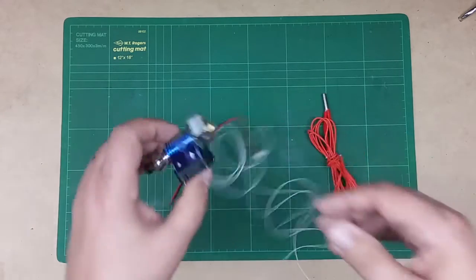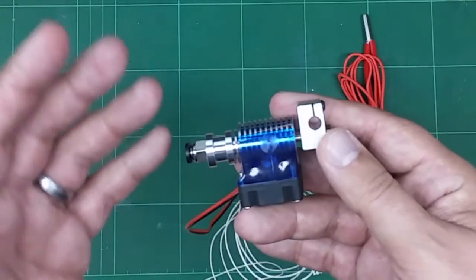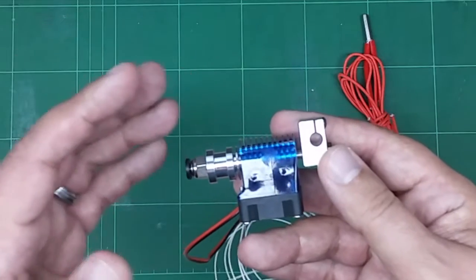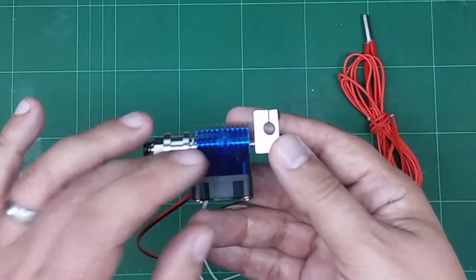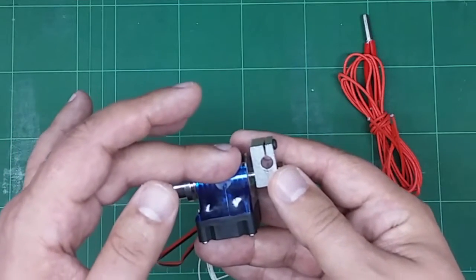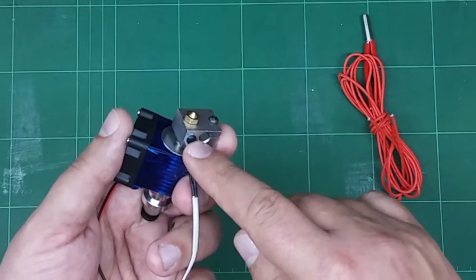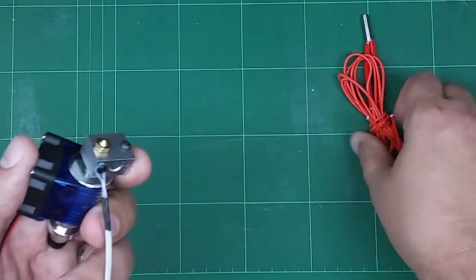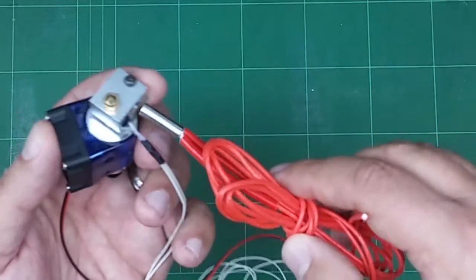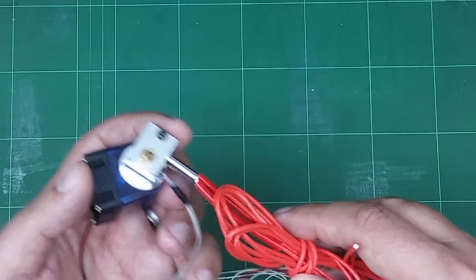So what I do is I have here my Bowden extruder. It's an E3D clone and we have a couple key pieces. So we have the actual hotend itself, which is comprised of a cold break in here. We have a heat block. We have a thermistor that measures the temperature and we have a nozzle. We also have the ceramic heating element which inserts into the heat block as such and actually provides the heat.